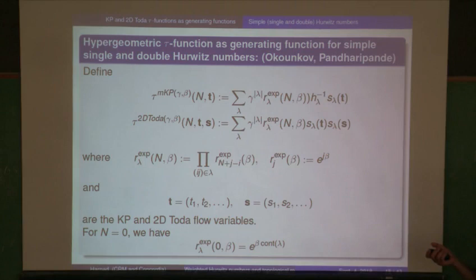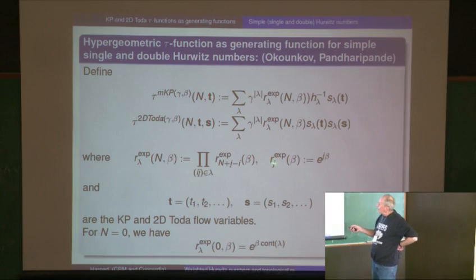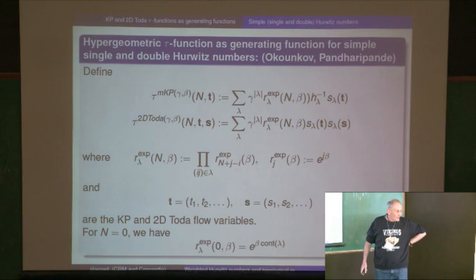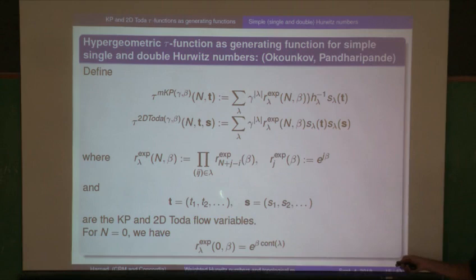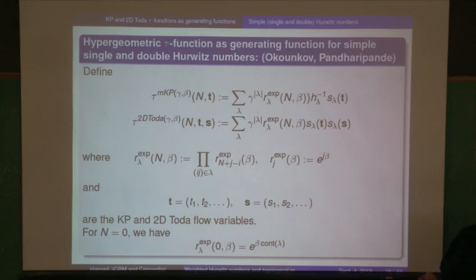In the Okounkov case, take the exponential function with a small parameter — eventually this will be Planck's constant for the WKB expansion. Take the exponentials of that multiplied by integers; that gives you a sequence of numbers r_j. Put these numbers into the Young diagram labeled by the content j minus i, and the product gives you exactly the exponential of the content sum.